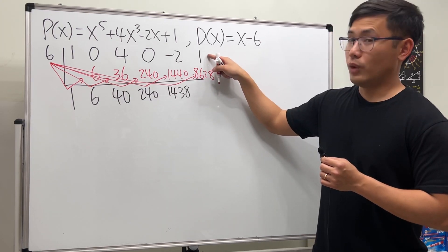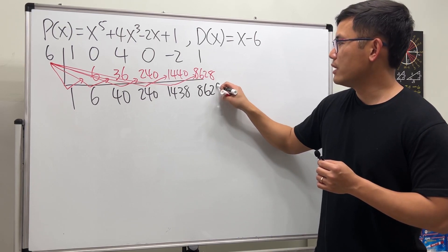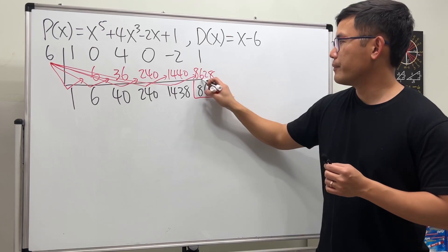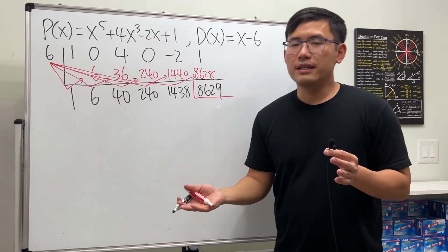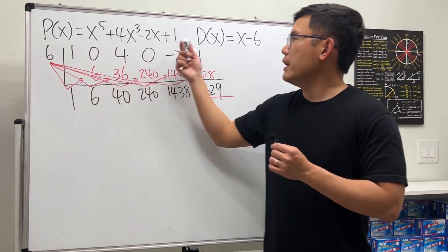And this is 1, so we add, so we have 8629. Okay, and this right here is our remainder. So how are we going to write the answer? In this case, let's put it in this form: polynomial, and this is the divisor.